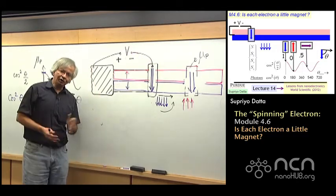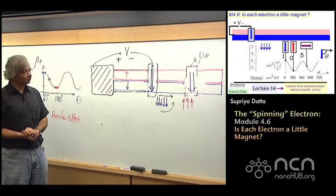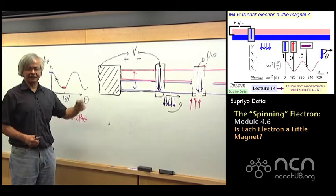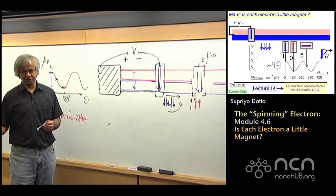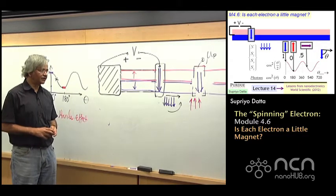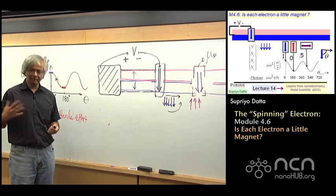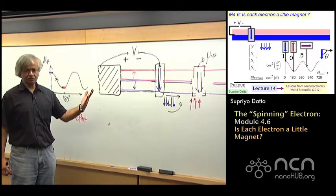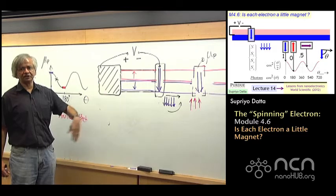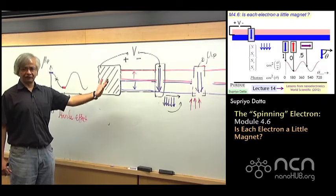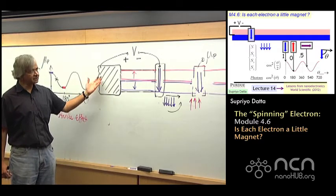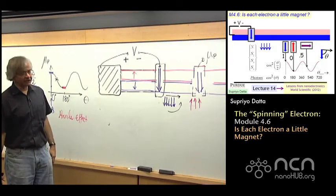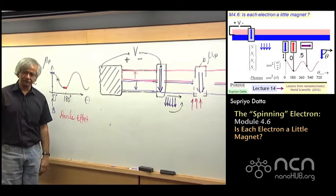It is hard to predict where spins and magnets will go in terms of logic devices — that's still work in progress. What is pretty clear is that in terms of memory devices, they are being used for reading information, and probably also for writing information, and all that is happening right now. Whether they will get used for logic devices is a whole different story.